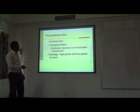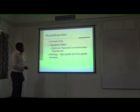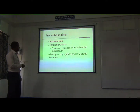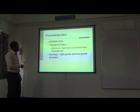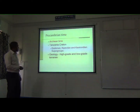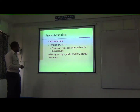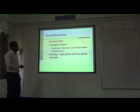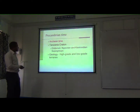At the Archean time, we have the Tanzania Craton, which is divided into three supergroups: the Dodoman, Nyanzian, and the Kavirondian supergroups. Most of these have been covered by high-grade metamorphic rocks as well as low-grade terrains, which are the greenstone belts.